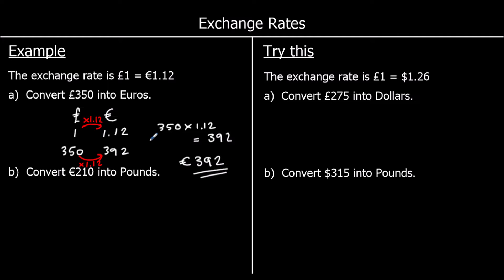You can also notice that if I wanted to go back from euros to pounds — how do I go from 1.12 back to a pound, or from 392 back to 350? I do the opposite of multiplying by 1.12, which is dividing by 1.12.